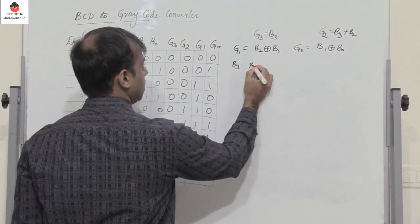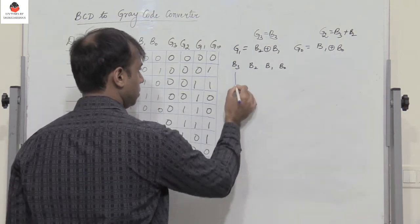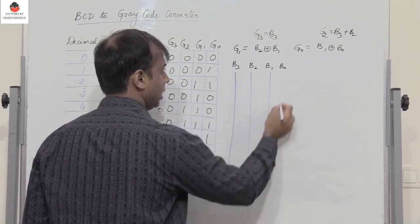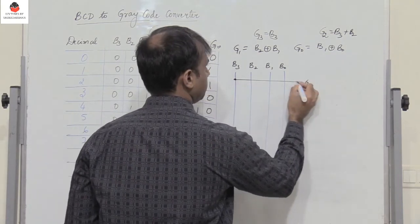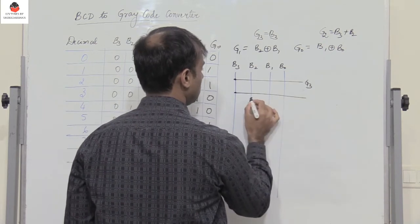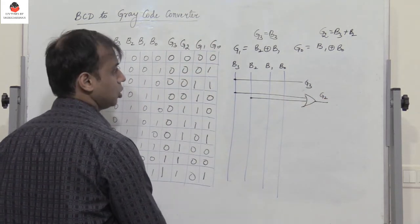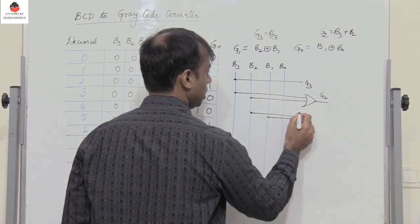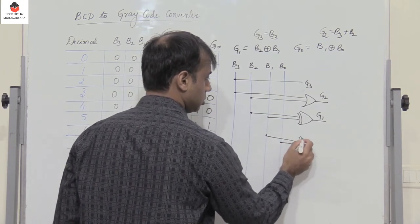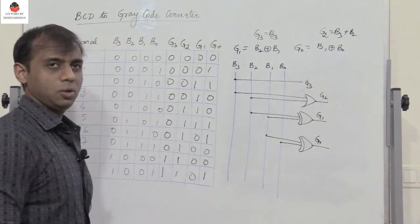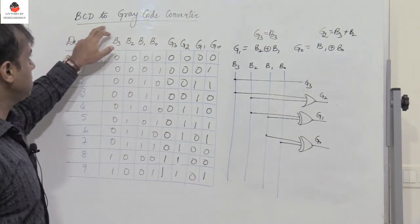Drawing four parallel lines B3, B2, B1, and B0: G3 is simply B3, so it connects directly. G2 is B3 OR B2, so pass B3 and B2 through a 2-input OR gate to get G2. G1 is B2 XOR B1, so pass B2 and B1 through a 2-input XOR gate to get G1. G0 is B1 XOR B0, so pass B1 and B0 through a 2-input XOR gate to get G0. This is the realization of the BCD to gray code converter.